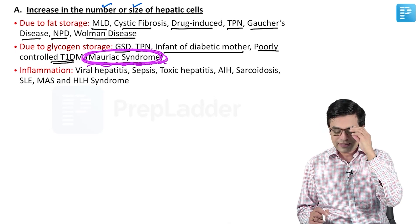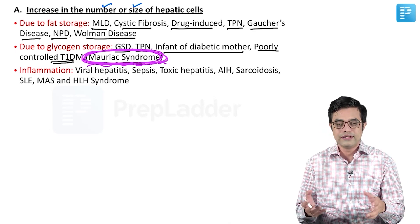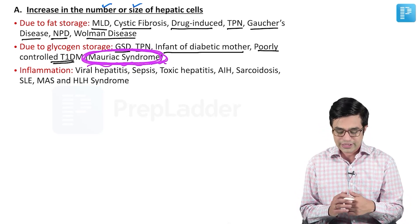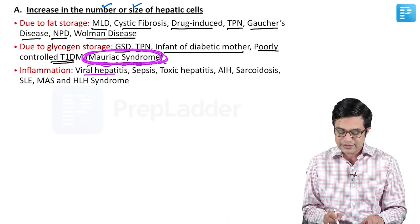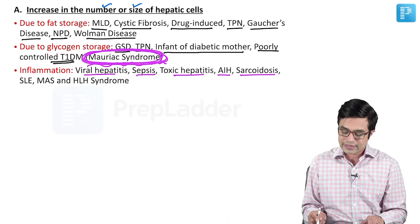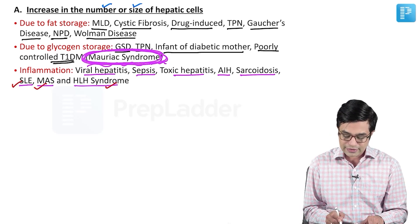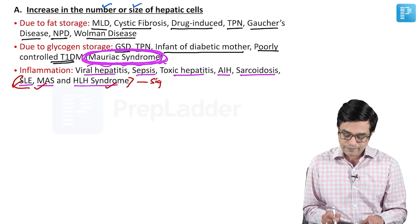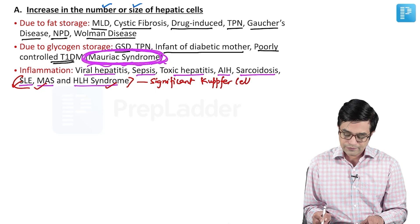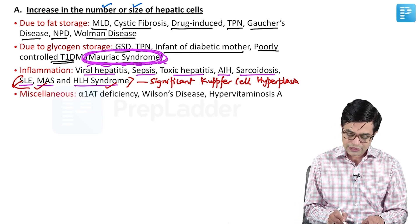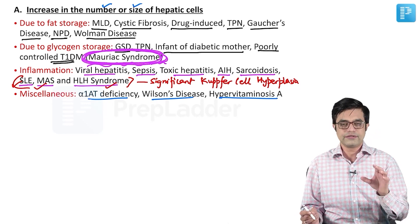Next is inflammation. Hepatic cell numbers can be increased in inflammation, or there can be infiltration of other cells, including Kupffer cell hyperplasia. This can be seen in conditions like viral hepatitis, sepsis, toxic hepatitis, autoimmune hepatitis, sarcoidosis, SLE, MAS, and HLH syndrome — particularly in SLE, MAS, and HLH, you will find significant Kupffer cell hyperplasia. Kupffer cells are the phagocytic cells present between the hepatocytes. Miscellaneous causes include alpha-1 antitrypsin deficiency, Wilson's disease, and hypervitaminosis A.